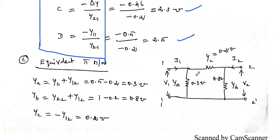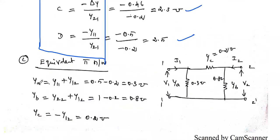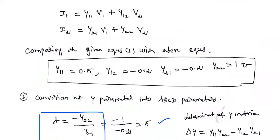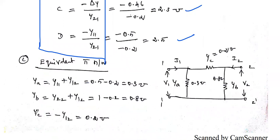Next, we draw the equivalent pi network. In the pi shape, three elements Y-A, Y-B, and Y-C are connected. Using the derived formulas: Y-A = Y11 + Y12 = 0.5 + (−0.2) = 0.3 siemens. Y-B = Y22 + Y12 = 1 + (−0.2) = 0.8 siemens. Y-C = −Y12 = 0.2 siemens. After calculating Y-A, Y-B, and Y-C, substitute them into the pi network diagram. This is the equivalent pi network of the two-port network.